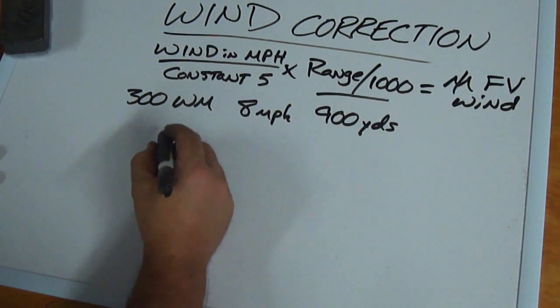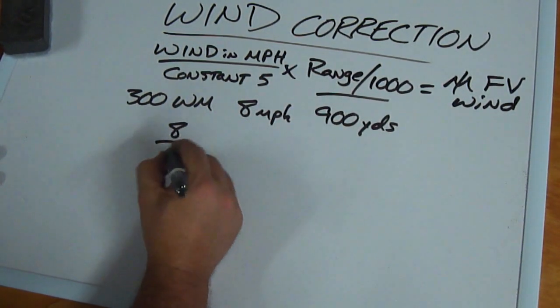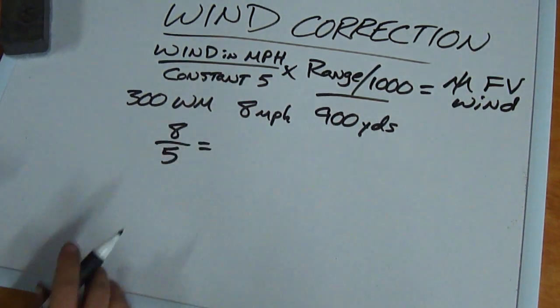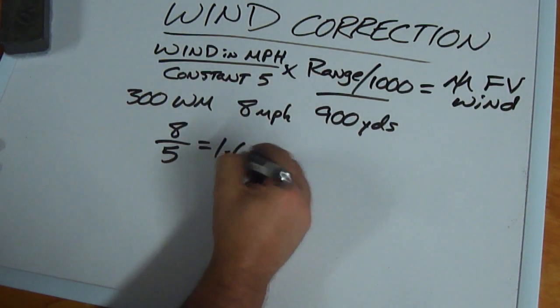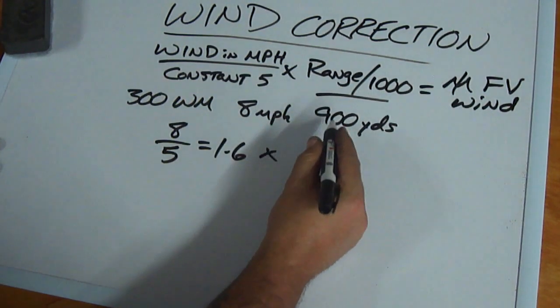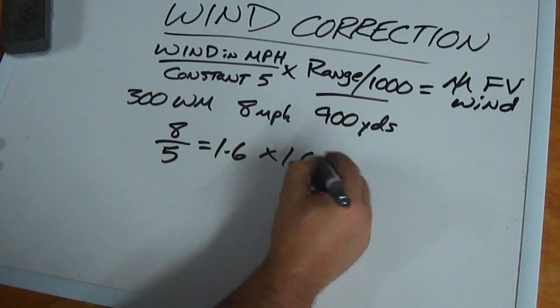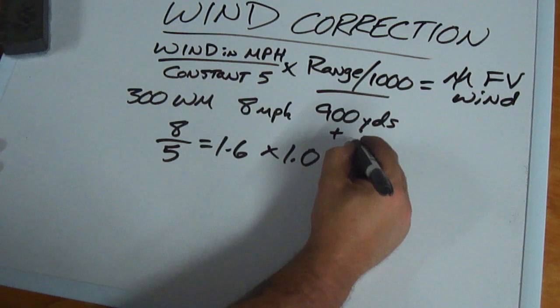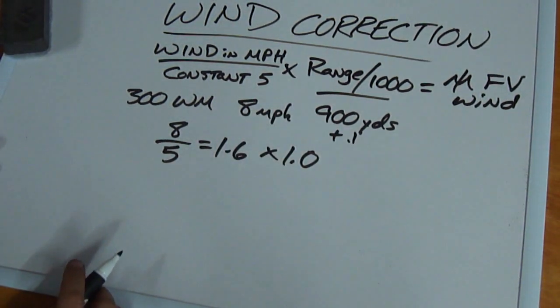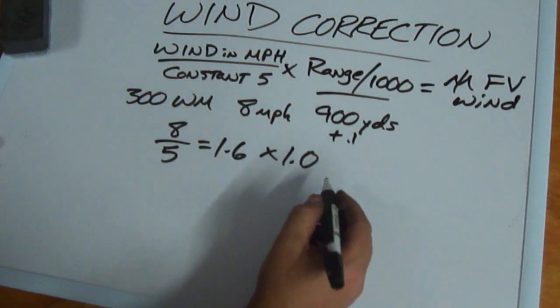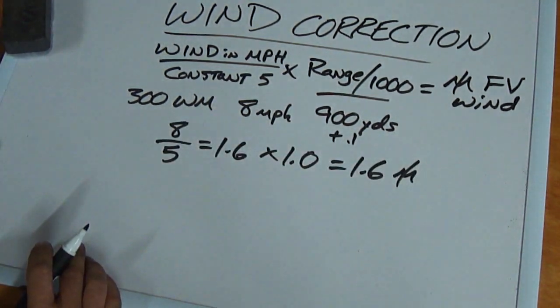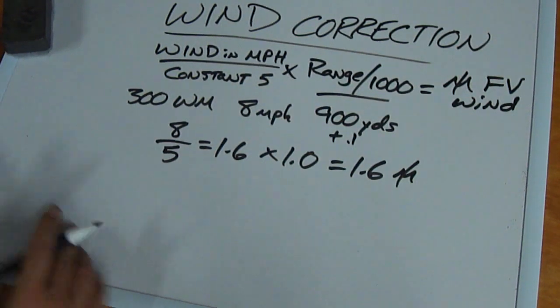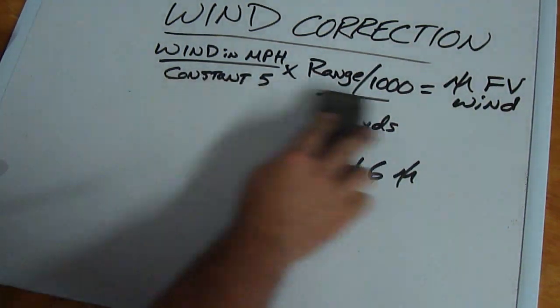So we're going to take our eight miles an hour and divide that by our constant of five. That's going to give us 1.6 times, remember this is going to be 1.0, we've got to add that .1 past 700 yards. 1.6 times 1 equals 1.6 mils full value wind. Hopefully everybody's still with me.